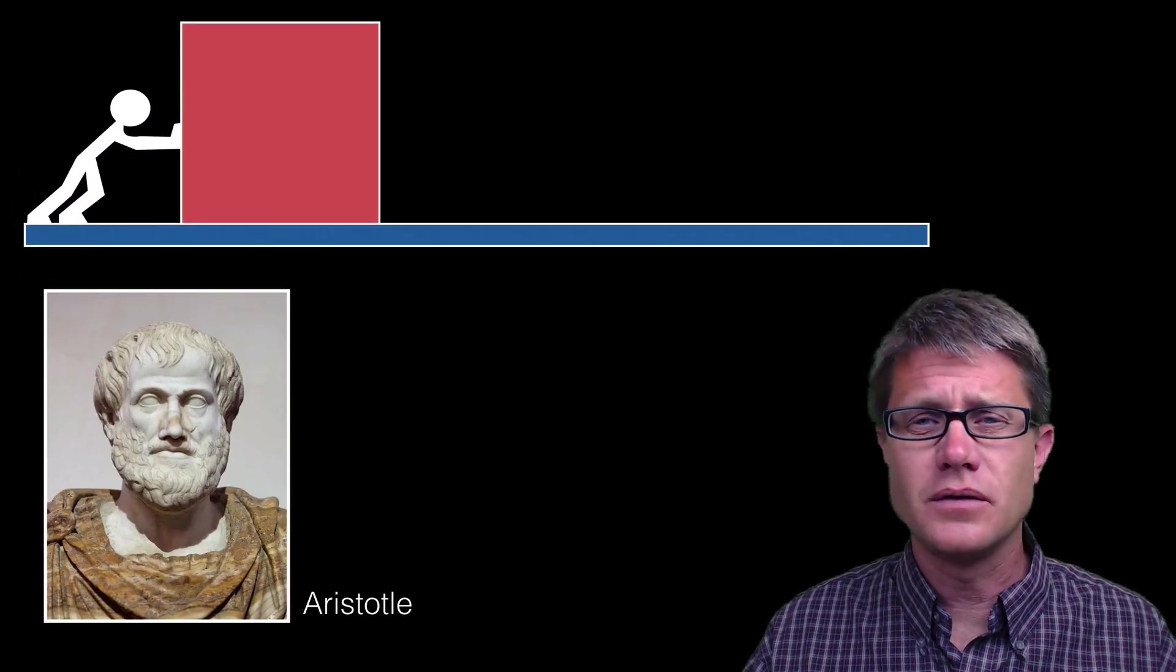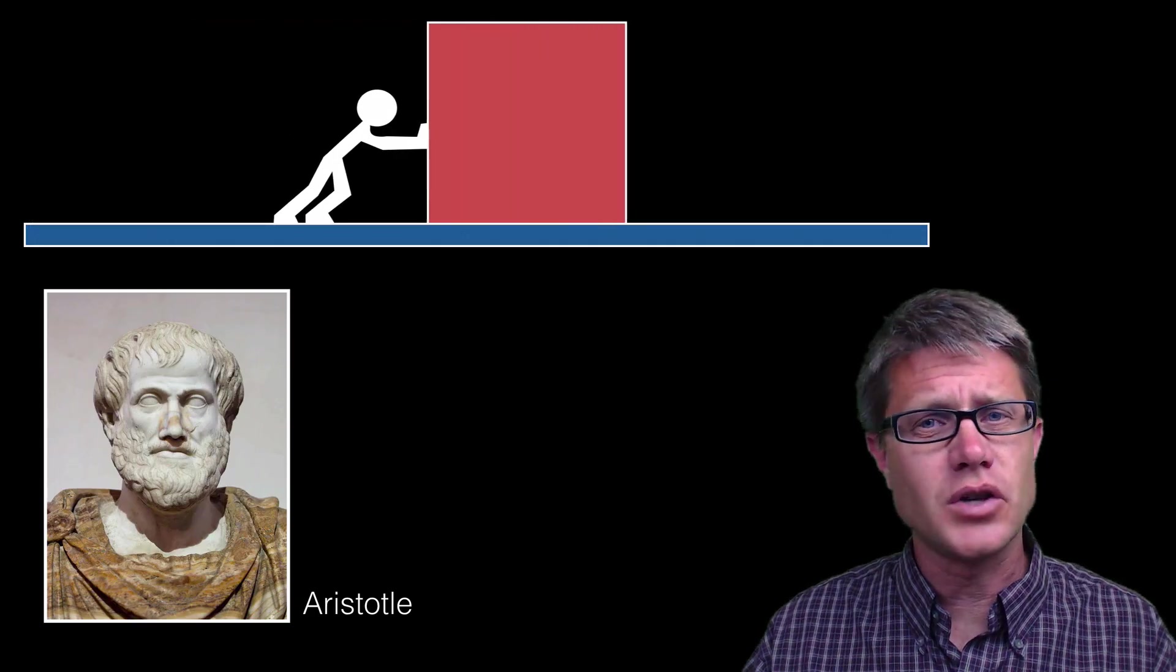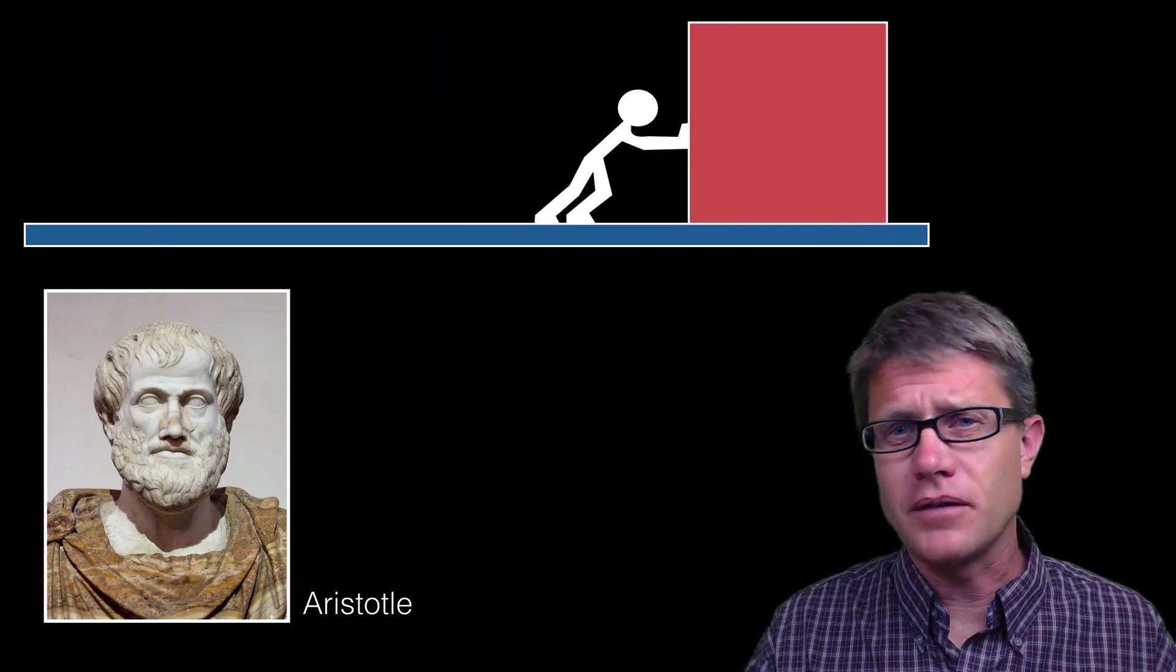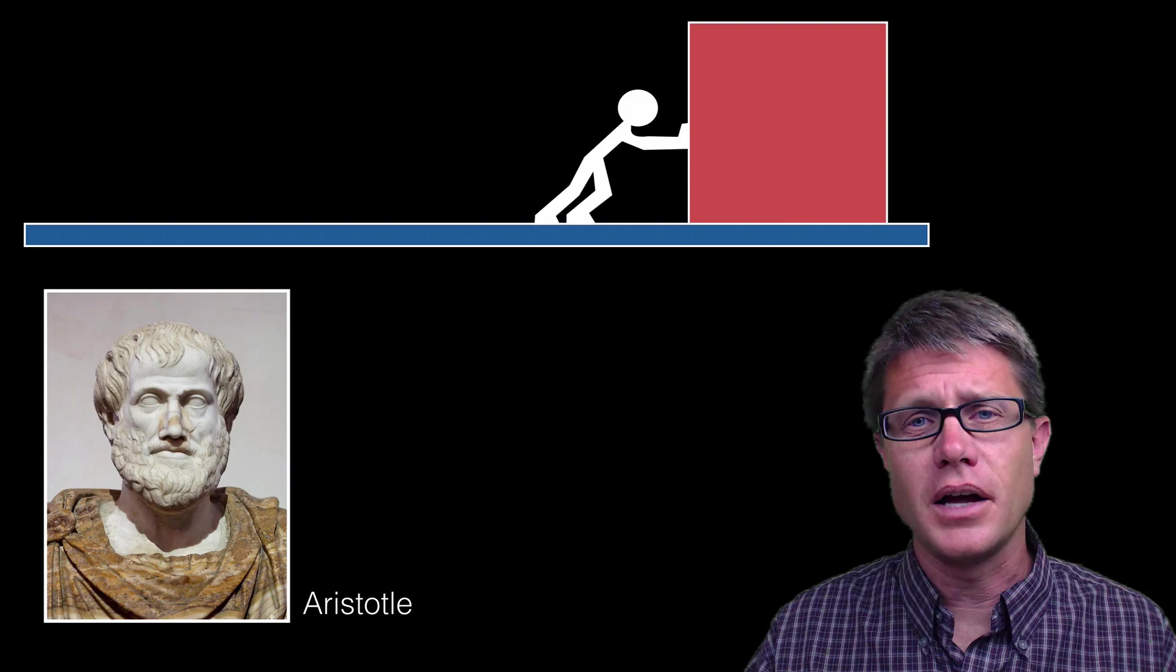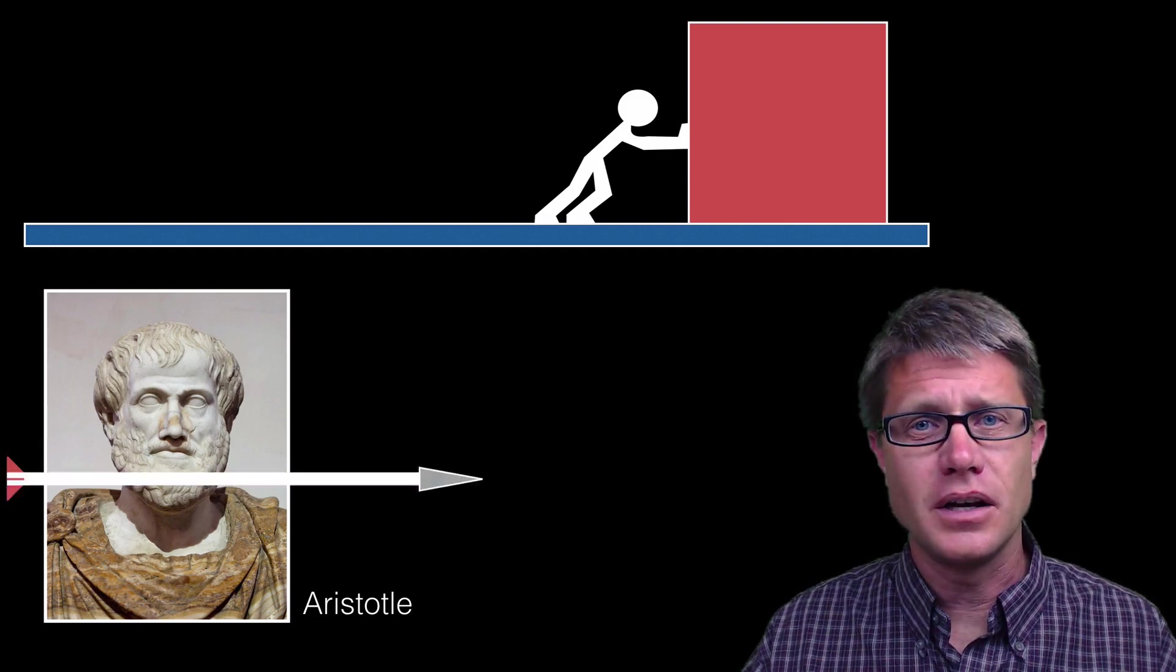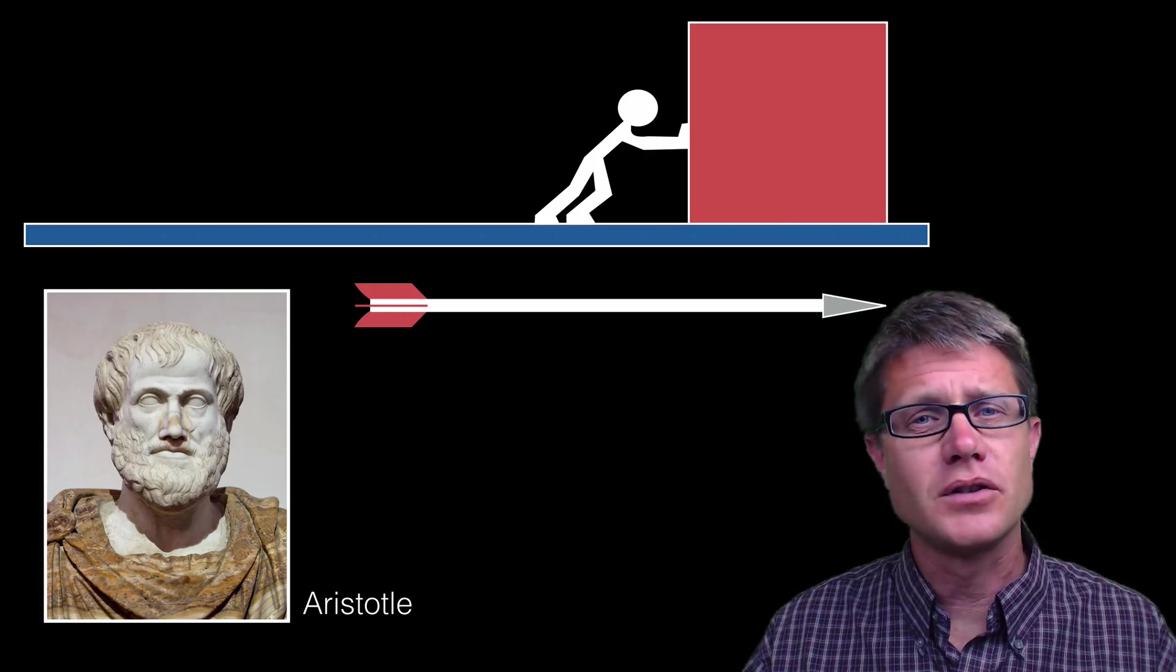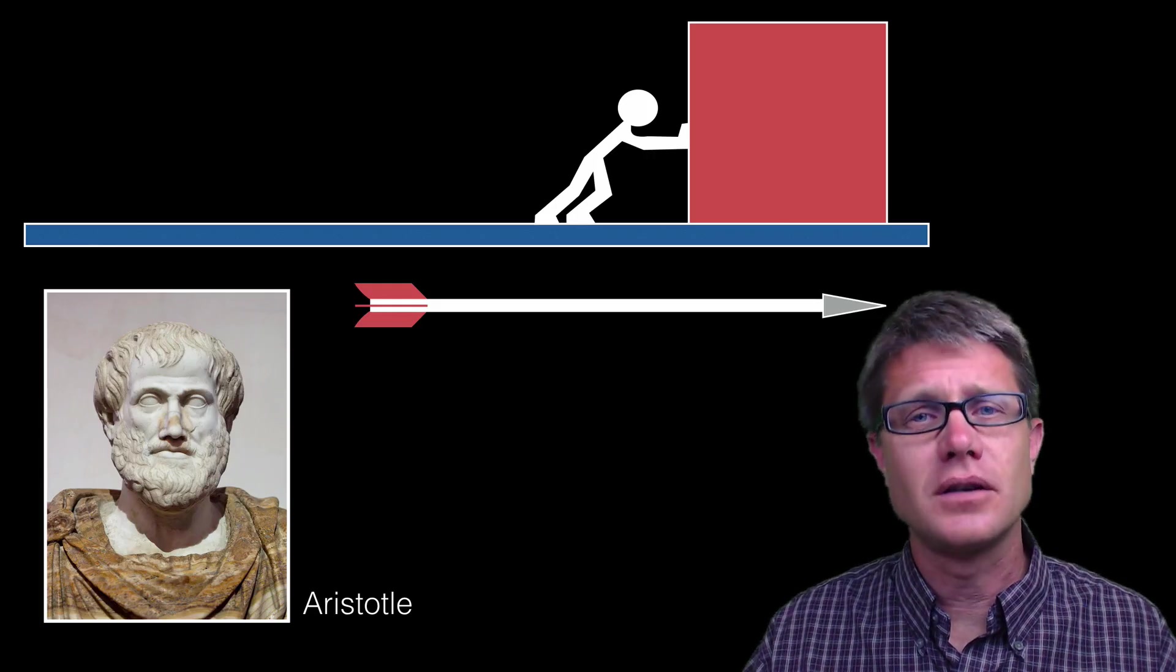Now this idea of motion has been confusing to scientists for a long time. Even Aristotle thought if you push an object across the floor then we have to have a constant force being applied onto that object to keep it moving at a constant rate. But what he did not see is friction. And he did not understand why an arrow keeps moving through space if there is nothing pushing it. It simply has inertia.